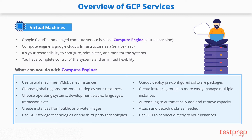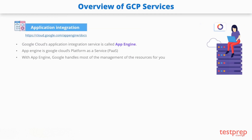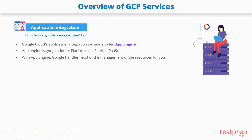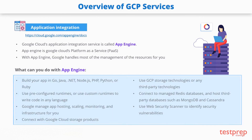Next is App Engine. Google Cloud's application integration service is called App Engine, which is Google Cloud's platform as a service offering. With App Engine, Google handles most of the management of the resources for you. For example, if your application requires more computing resources because traffic increases, Google automatically scales the system. If the system software needs a security update, that's also handled for you. You can build your app in several languages and use pre-configured runtimes, or use custom runtimes to write code in any language.